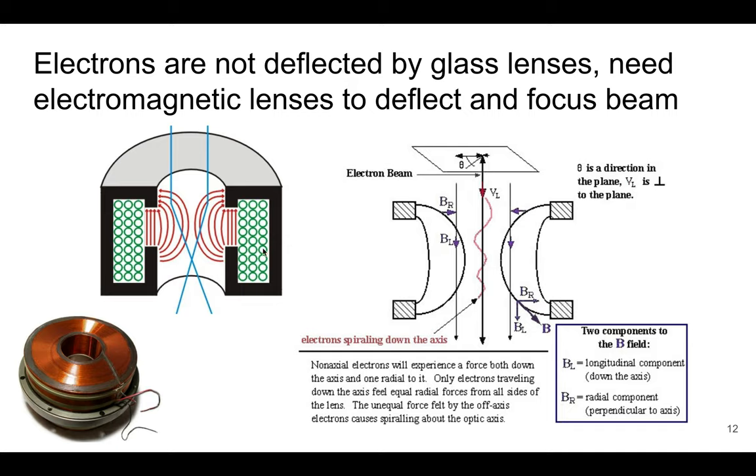The electromagnetic lenses that we talked about in SEM are the same here. So their goal is to cause these electrons to spiral closer to the axis as they go down towards the specimen. So all of those lenses are composed similarly to SEM.